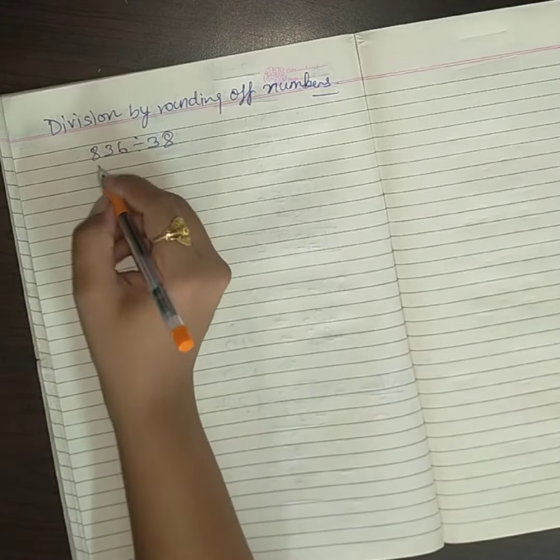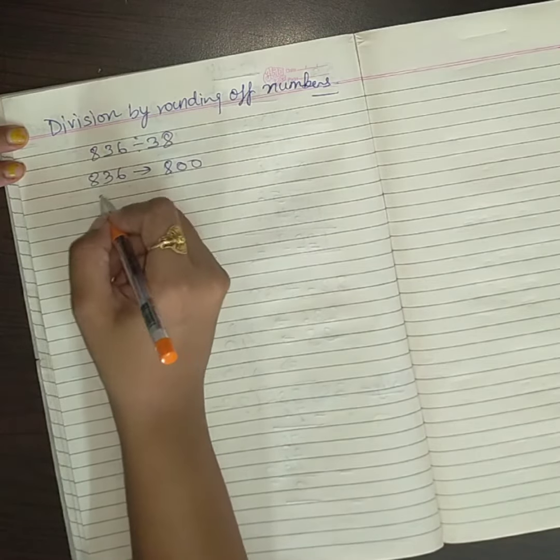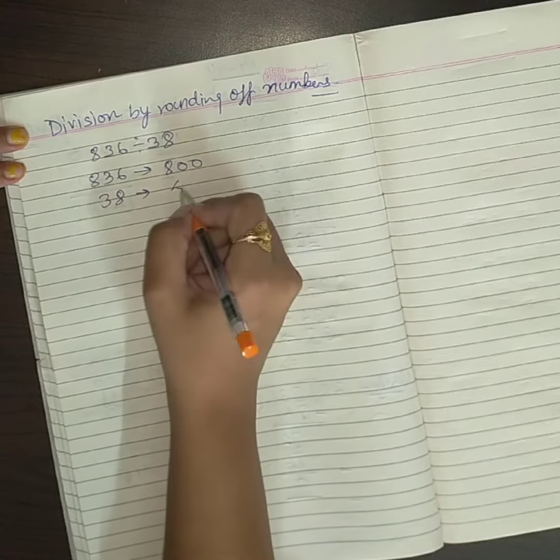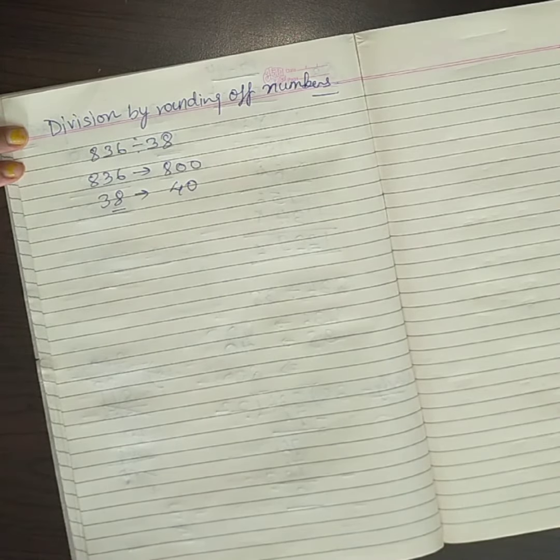So, first round off 836 to 800, and 38 round off to 40, because here we have 8, right?